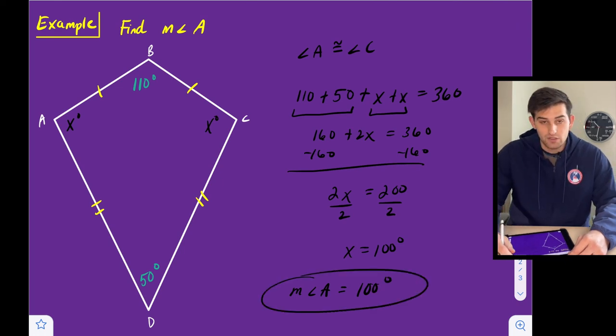So A is 100, C would also be 100. And we could check that by adding all four of those together and it should equal 360. So thanks for watching. Those are some properties of kites.